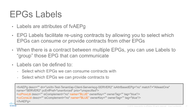When there is a contract with multiple EPGs you can use labels to group those EPGs that can communicate and restrict those that cannot. In this sense the labels can be defined to select which EPGs we can consume contracts with or which EPGs we can provide contracts to.